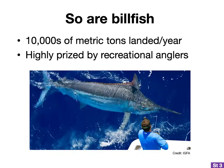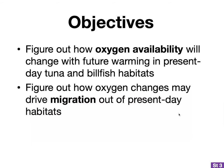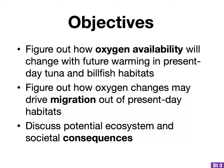Though substantially less than tuna, landings of billfish are still typically in the tens of thousands of metric tons per year, with swordfish constituting most of their catch. Other billfishes are prized by recreational anglers for their acrobatic abilities and large body sizes. The point of this report was to figure out how oxygen availability will change with future warming in present-day tuna and billfish habitats, how oxygen changes might drive migrations out of present-day habitats, and to discuss potential ecosystem and societal consequences.